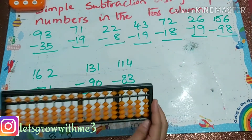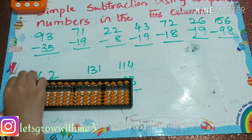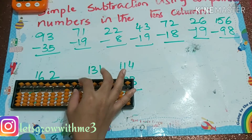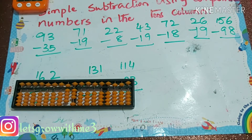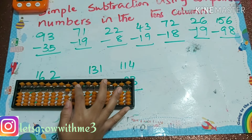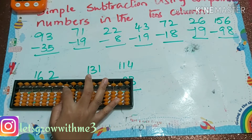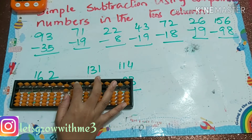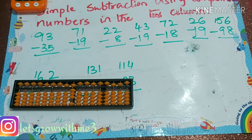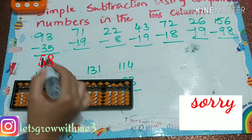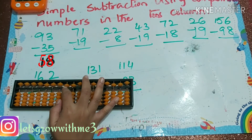93 minus 35. How to do minus 5? You can't do it here — you don't have sufficient digits — so I'll do minus 10 plus 5. So our answer is 58.